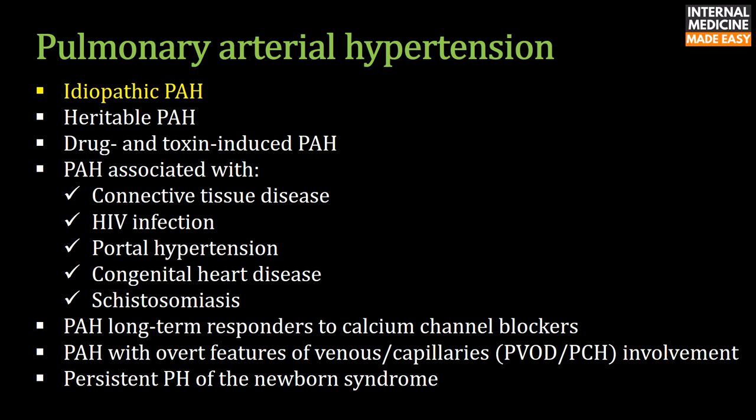Idiopathic pulmonary arterial hypertension, formerly called primary pulmonary hypertension, is a rare disease with different clinical phenotypes. By definition, it is diagnosed only after alternative diagnoses have been ruled out.